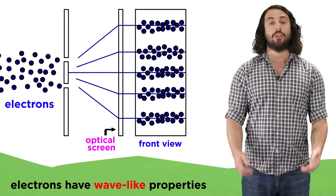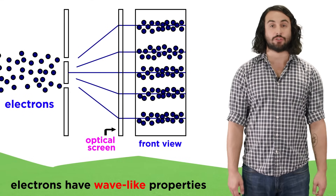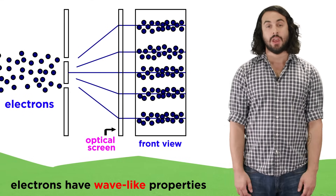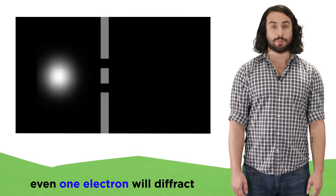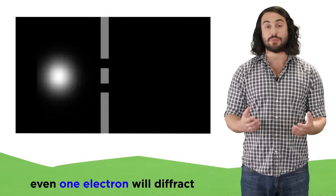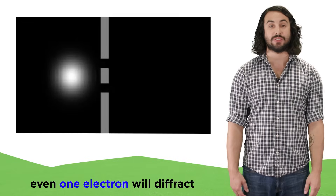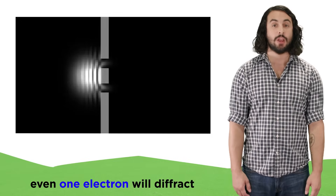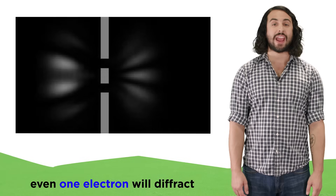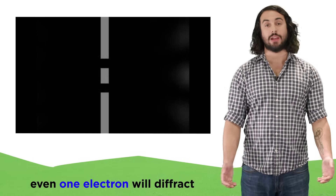This demonstrates the wave-like properties of electrons, and by extension, matter in general. Later, low intensity experiments showed that even an individual electron, when passing through biprisms or slits, will interfere with itself, making the wave-like nature of the electron undeniable.